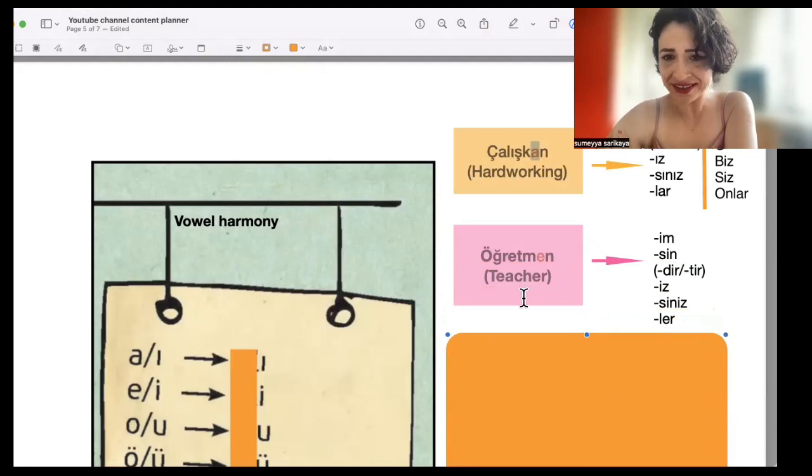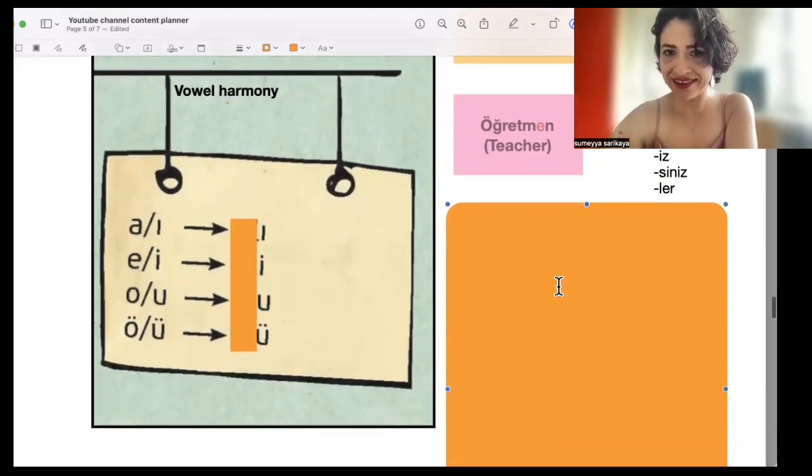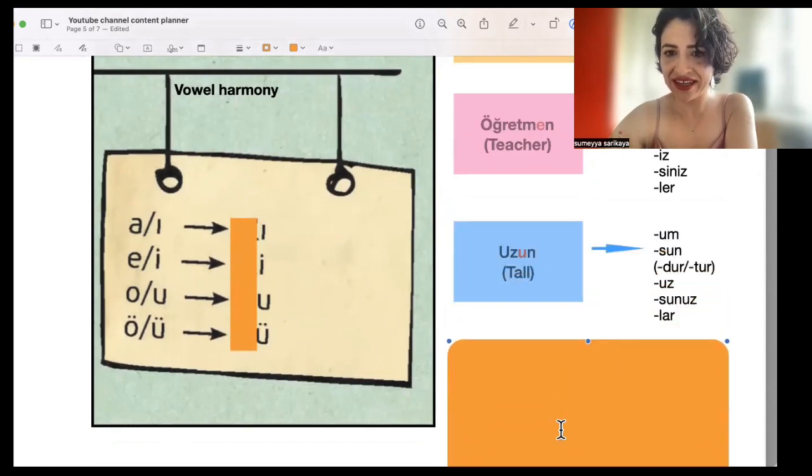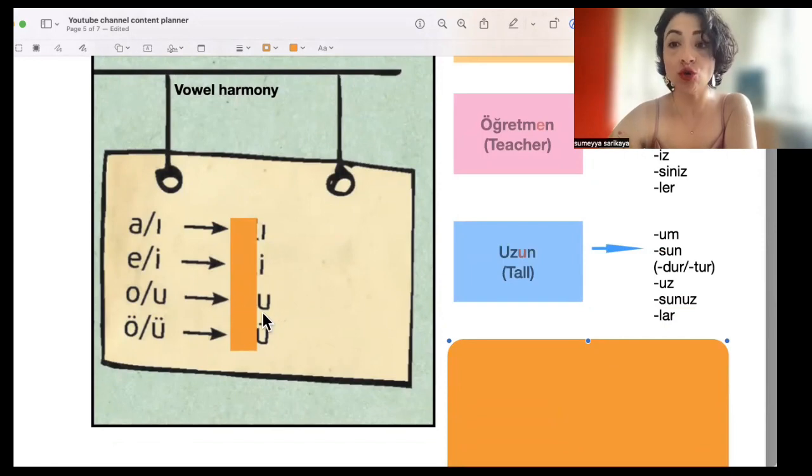So we looked at this example in the previous session, so I'm going to skip that one. Let's have a look at the next. Here, with ending vowel o or u, we choose vowel u.